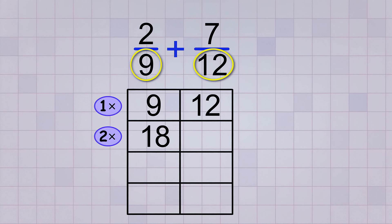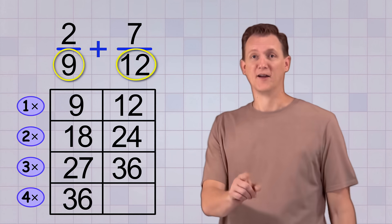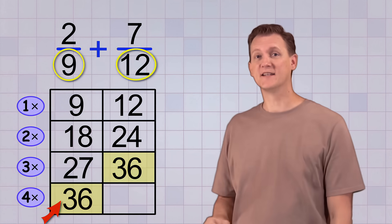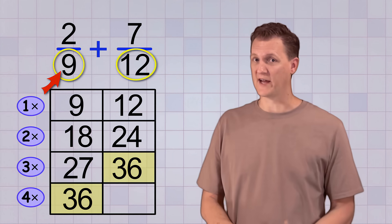9 times 2 is 18, and 12 times 2 is 24. 9 times 3 is 27, and 12 times 3 is 36. 9 times 4 is 36. Ah-ha! We found it! 36 is the least common multiple of 9 and 12, so we'll use that as our common denominator.